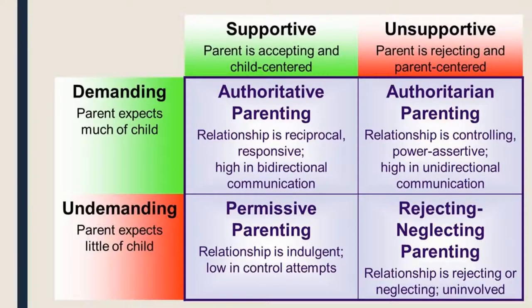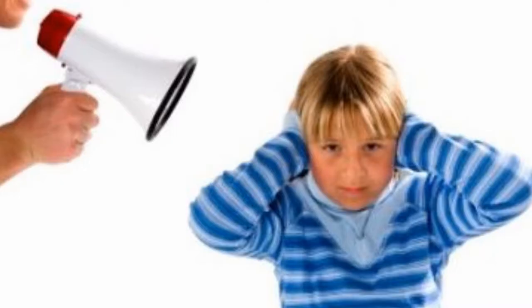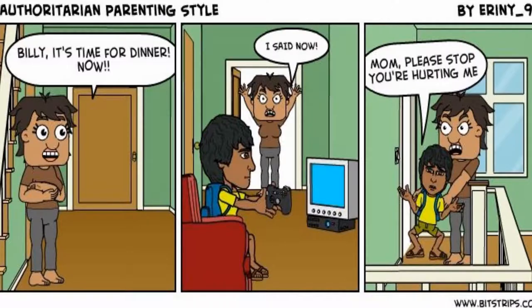In the authoritarian style with the same example — a three-year-old grabbing a toy from a friend — the parent would demand the child return the toy right away, not giving any attention to the fact that the child may want to play with it, and not teaching them that someone else is playing with it now and they can take turns if they wait.